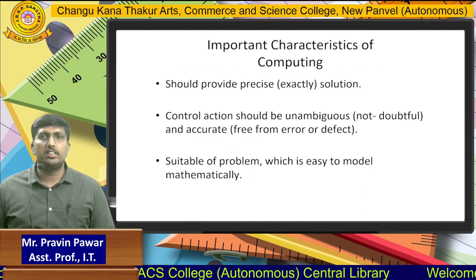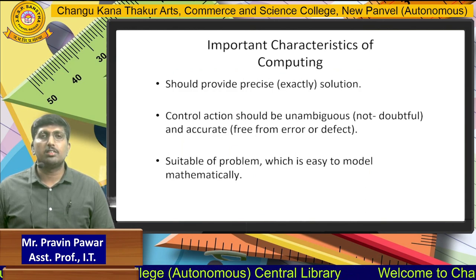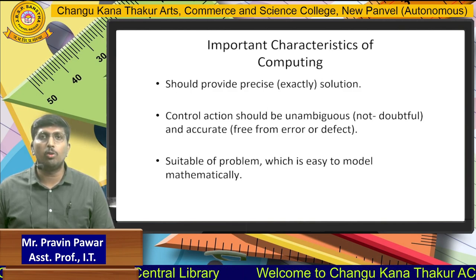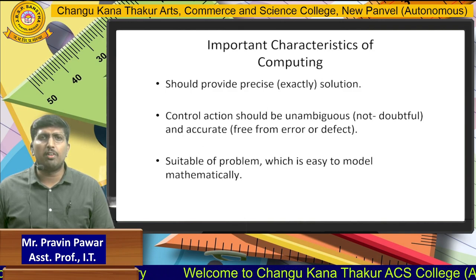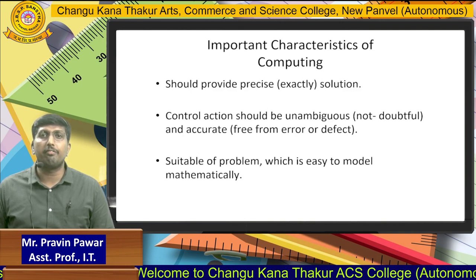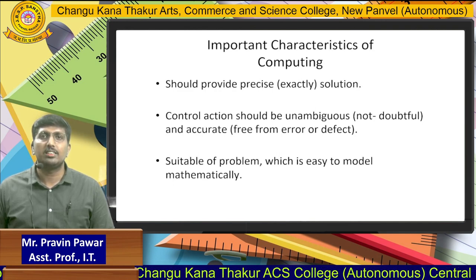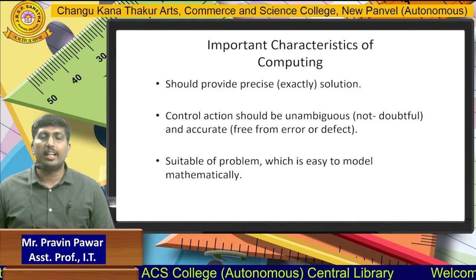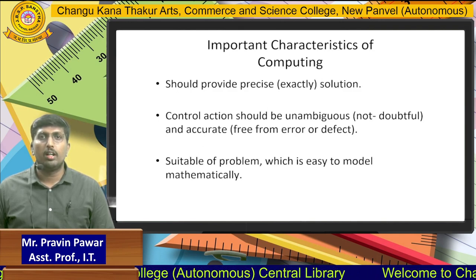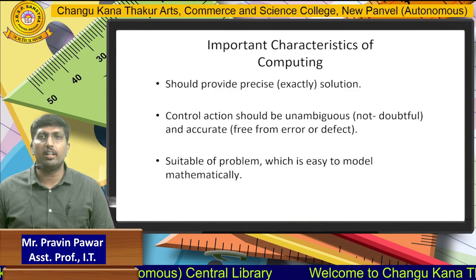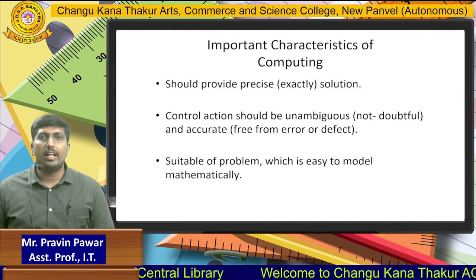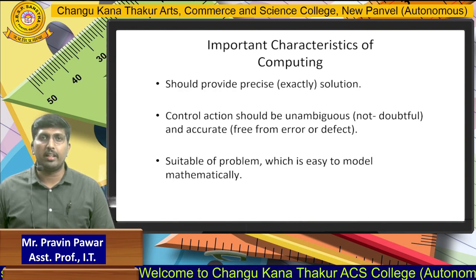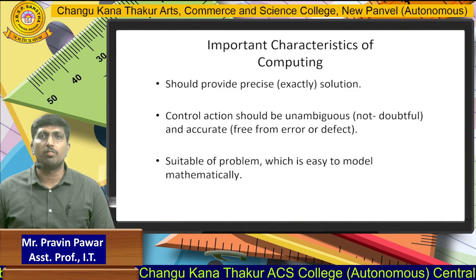Now the important characteristics of computing: whenever we are using computing systems, if we provide any kind of input into that particular computation and we get a precise solution, that is part of computing. The control action should be unambiguous — that is non-doubtful and accurate, meaning free from error or defect. The third point is the problem should be easy to model mathematically — that is also part of the characteristics of computing.